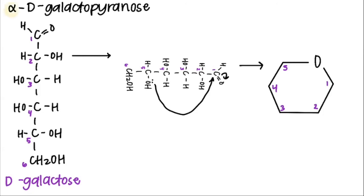the problem tells me that it is in the alpha configuration. Therefore, the hydroxyl is going to point down. For carbon two, the hydroxyl is pointing down. For carbon three, the hydroxyl is pointing up. For carbon four, the hydroxyl is pointing up. And since we're in the D configuration, carbon number six is going to be pointing up.